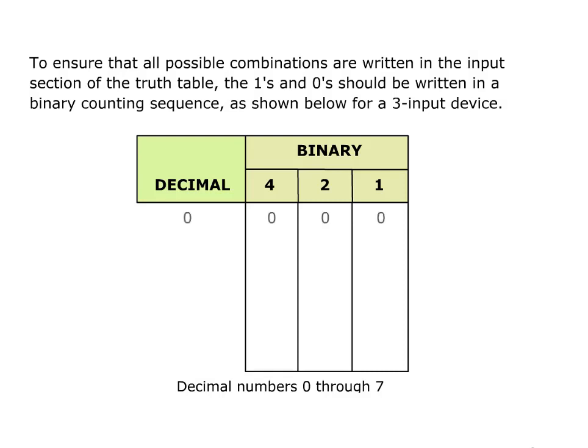To ensure that all possible combinations are written in the input section of the truth table, the 1s and 0s should be written in a binary counting sequence, as shown below, for a three-input device.